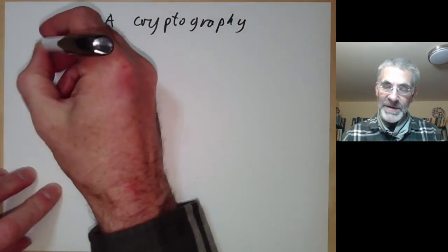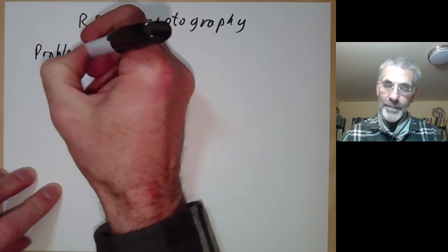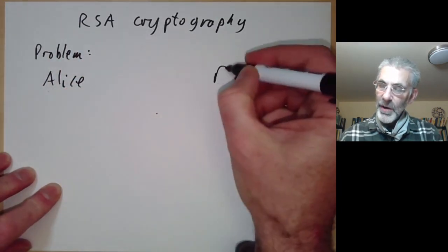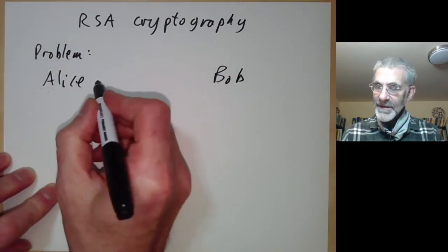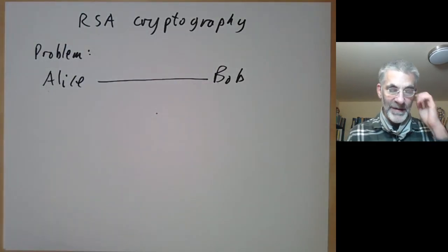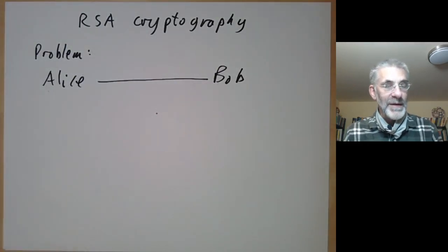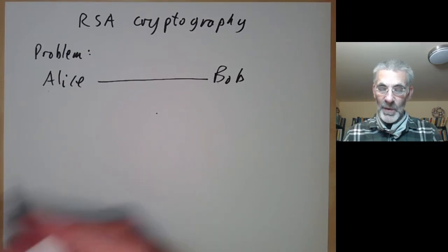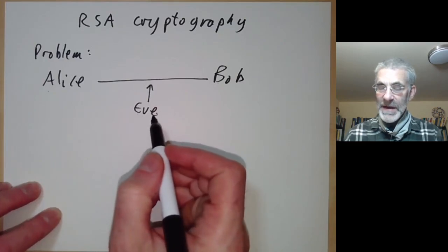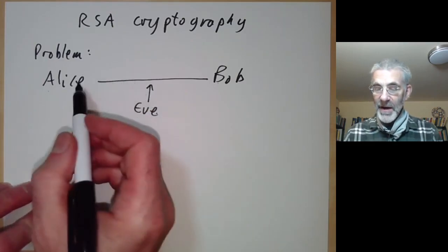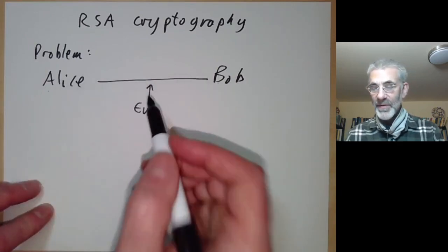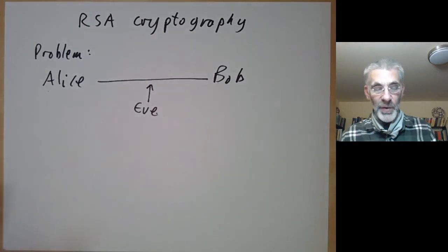The basic problem is as follows: you have two people traditionally called Alice and Bob who wish to communicate over the internet or phone. They want to send each other messages they don't want someone to read. In between them is someone traditionally called Eve, for eavesdropper, who reads all the messages between Alice and Bob.